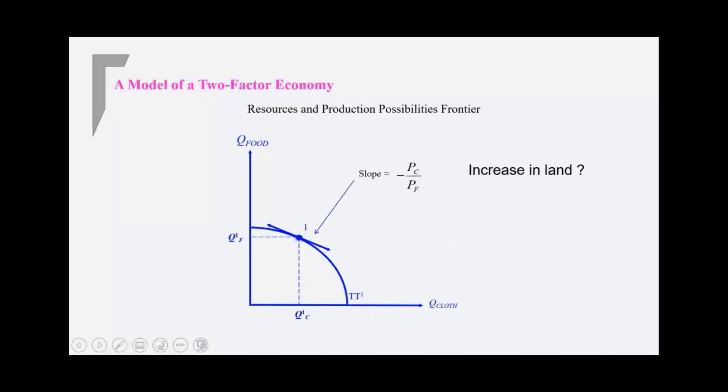So now, once you have the price line, which is also referred to as the ISO value line, I'm just going to show you what happens when there is increase in land. We know how the production possibility frontier changes. It's outward shift in possibility frontier and bias towards food, which is more land intensive. And so let's draw that line.